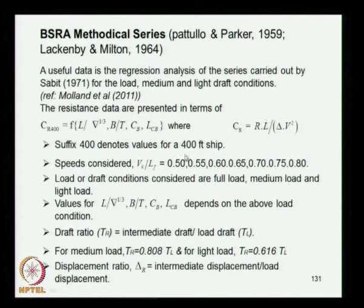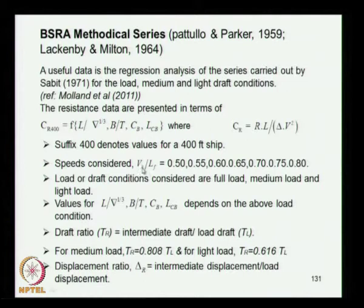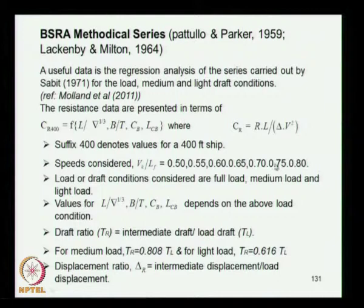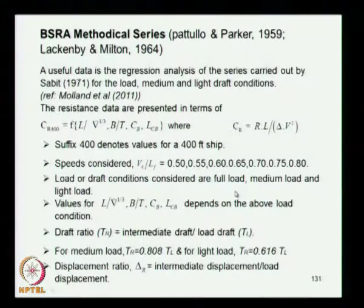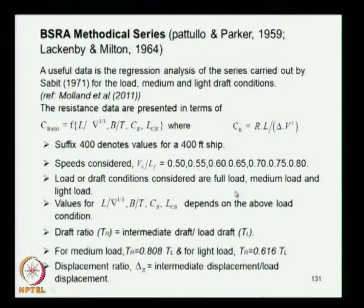Here Cr is defined using a different non-dimensionalization: R × L / (mass displacement × V²). The suffix 400 denotes a 400-feet reference ship. The speed ratio used is V_k/√L_f, where V_k is speed in knots and L_f is length in feet, ranging from 0.5 to 0.8. Three loading conditions are considered: full load at design load waterline, a medium intermediate condition, and a light condition. The Cr value parameters depend on the loading condition.